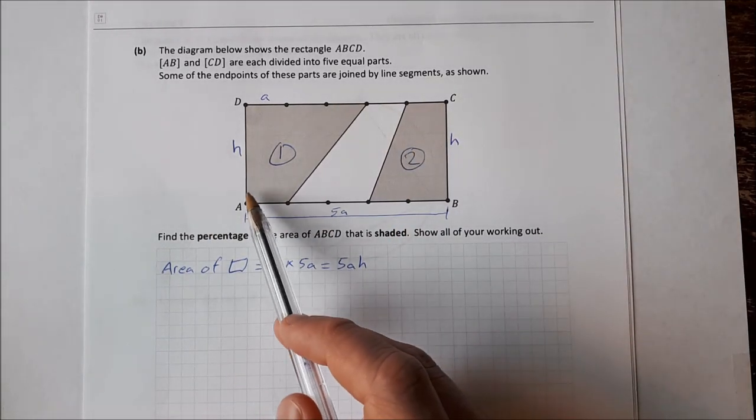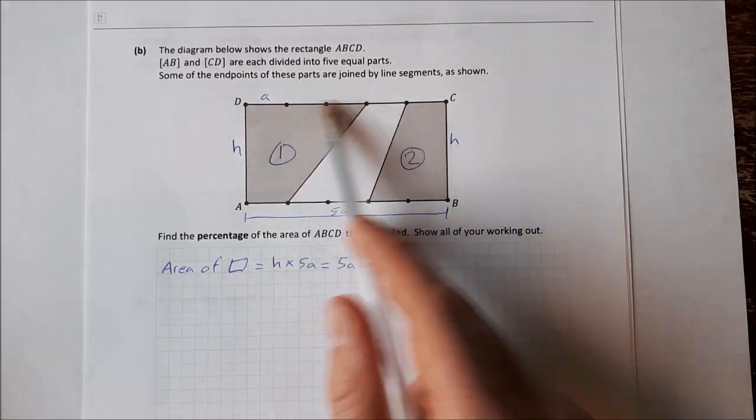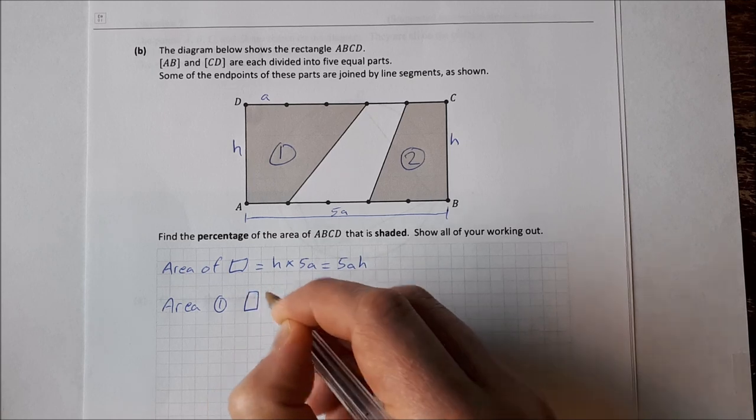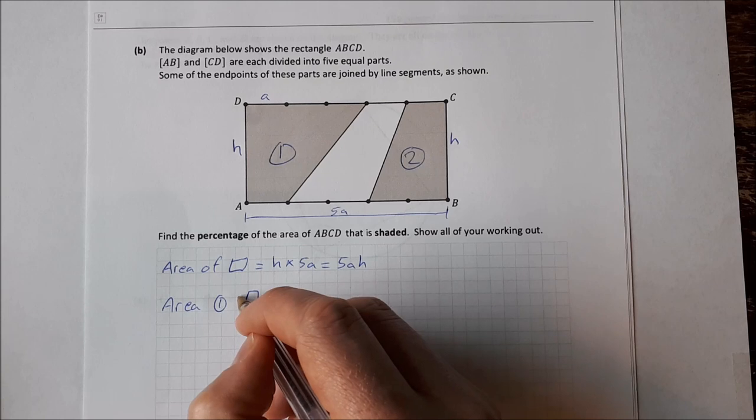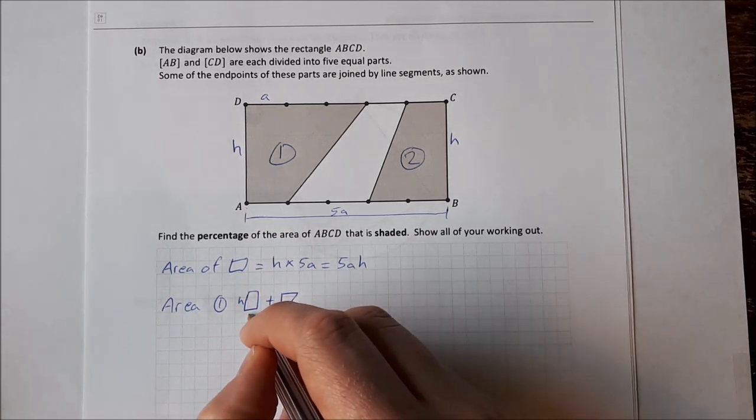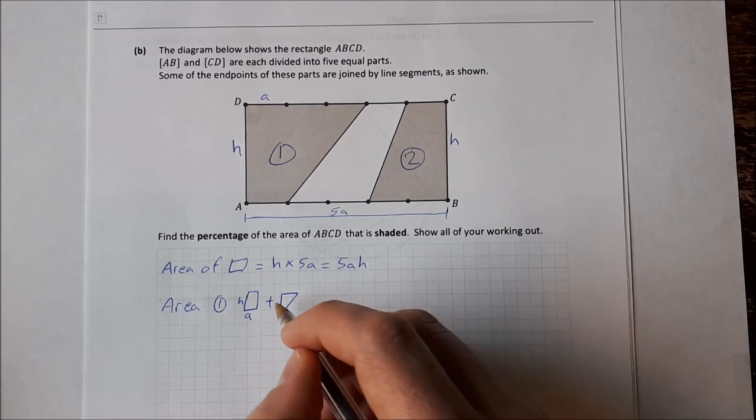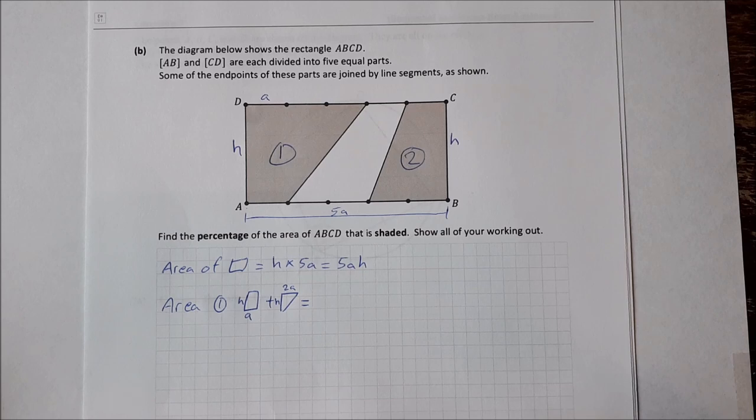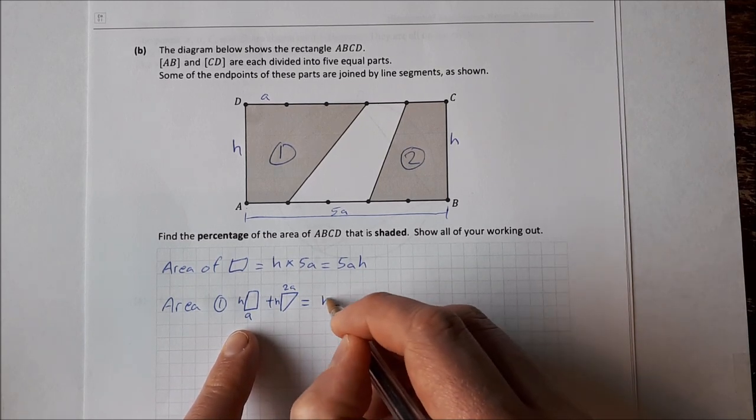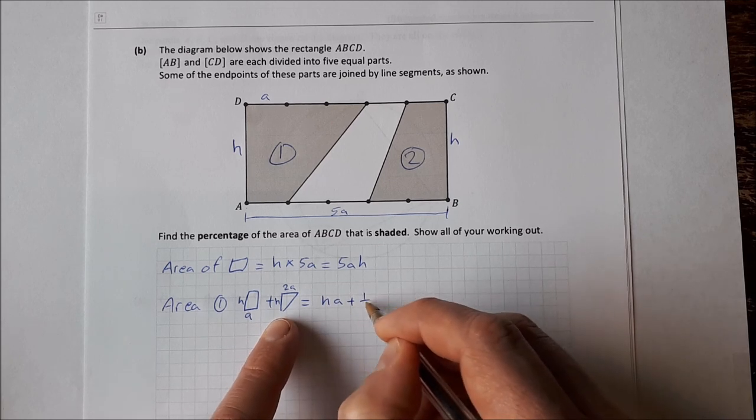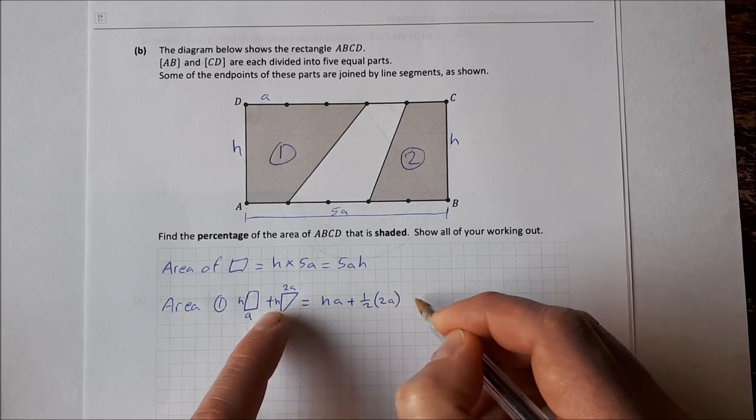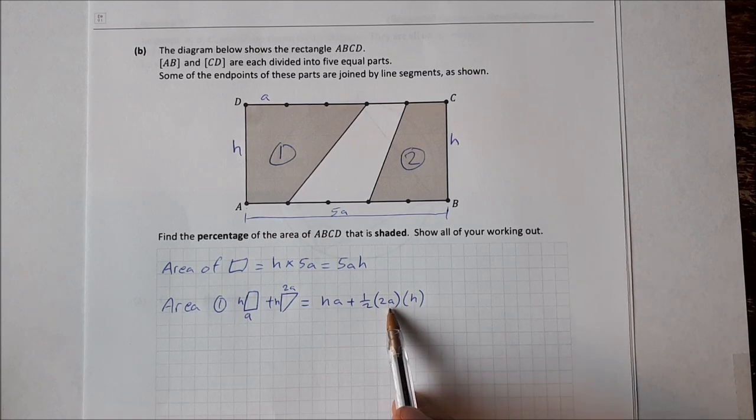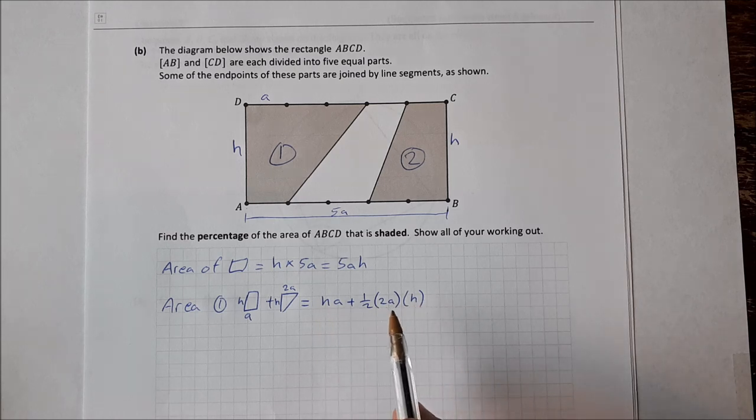So area 1, if you look at it, it's a rectangle and a triangle. So area 1 is a rectangle plus a triangle. The rectangle has height H and it has length A. The triangle has a height H and a length of 2A. So if we calculate that out, the area of the rectangle is HA and the area of the triangle is a half times the base which is 2A times the height which is H. So we have a half by 2A by H, a half by 2A is A, A by H is AH, and then AH plus AH is 2AH.